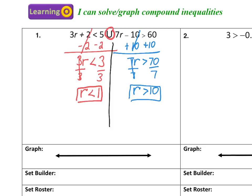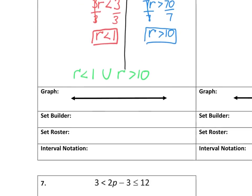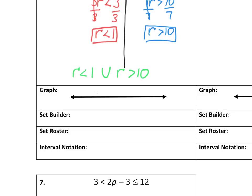So now I have two separate inequalities that are going to go together on the same number line. Since there's an OR symbol in between, I'm going to say R is less than 1 or R is greater than 10. These are the numbers that fit into this solution set. I'm going to graph both situations on the number line. The smaller number, 1, goes on the left, and the larger number, 10, goes on the right. Neither is included because they don't have an equal to sign. So I use open circles, shading left of 1 and right of 10.